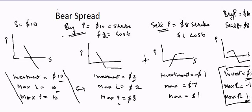Looking at the bear spread by itself, an investment of $1 gives a maximum loss of $1 and a maximum profit of $1, which is almost 100% return potential. It's very efficient compared to holding the stock outright. This gives you the option to spread your investment across different stocks without concentrating in a single one, while also lowering your risk. I hope this tutorial helps, and I'll see you in the next one — thank you.